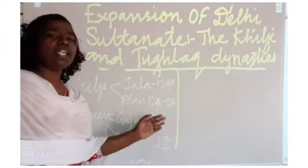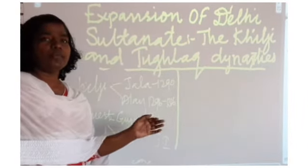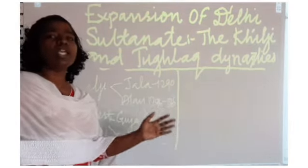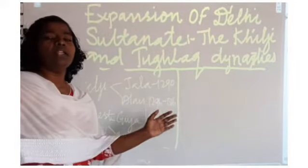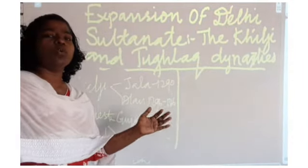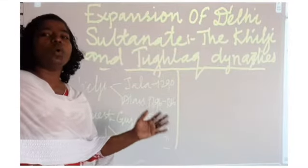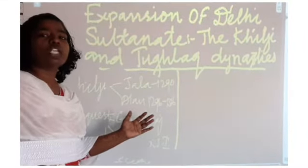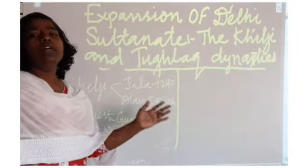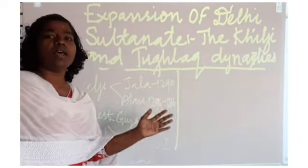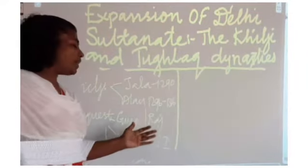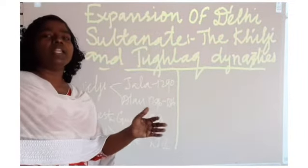An important incident that took place was Jauhar. Jauhar is the compensatory or voluntary mass suicide performed by Rajput women in Rajasthan. These Rajput women did not want to fall into the hands of Muslim rulers. They wanted to keep their purity, so they performed Jauhar. It is a mass suicide. It happened during the period of Alauddin Khalji and also in later periods.